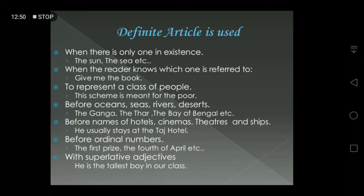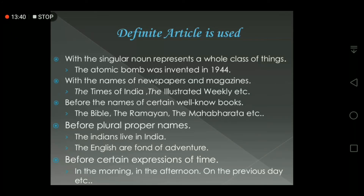Rule five: before names of hotels, cinemas, theaters, and ships — for example: 'He usually stays at the Taj Hotel.' 'Taj Hotel' is the name of a hotel, so we use 'the' before it. Rule six: before ordinal numbers — ordinal numbers like first, second, third, fourth — we use the definite article 'the' before them. Rule seven: with superlative adjectives — adjectives have three degrees: positive, comparative, and superlative — and in the superlative degree we use 'the'.